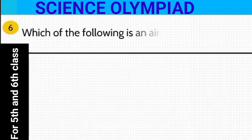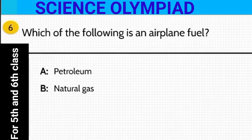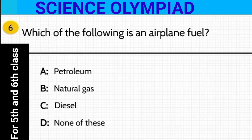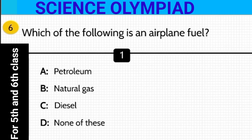Which of the following is an airplane fuel? Is it petroleum, natural gas, diesel, or none of these? The answer is petroleum — it is the fuel which is used in airplanes.